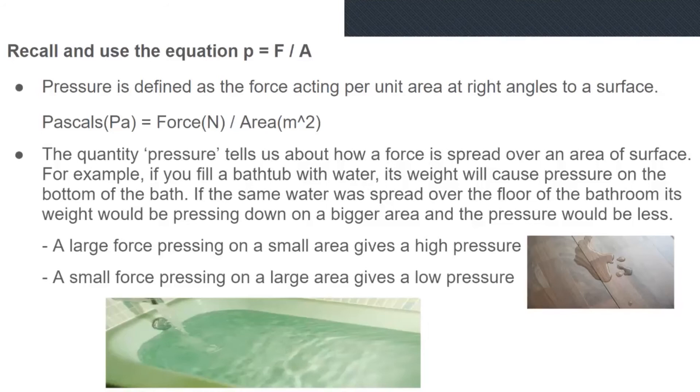The quantity pressure tells us about how a force is spread over an area of surface. For example, if you fill a bathtub with water, its weight will cause pressure on the bottom of the bath. If the same water was spread over the floor of the bathroom, its weight would be pressing down on a bigger area and the pressure would be less. A large force pressing on a small area gives a high pressure. A small force pressing on a large area gives a low pressure.